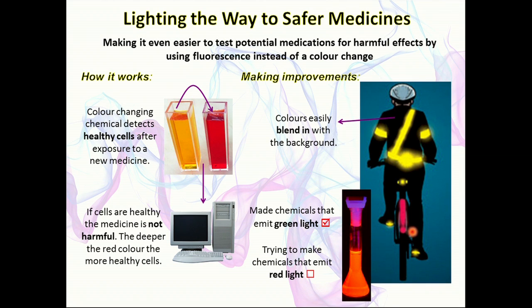So what I actually wanted to do was look at something that we could measure more effectively, and that's fluorescence. There's a really good example of this if you think of a cyclist. If you think of someone wearing normal clothes cycling down the road, they tend to blend in with the background. If you then add a fluorescent sash to them, they'll stand out because suddenly they're emitting light, and you can actually see them regardless of the background.